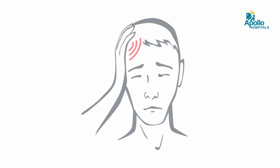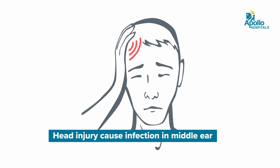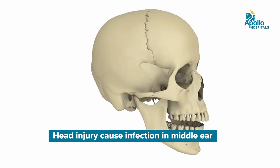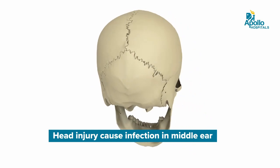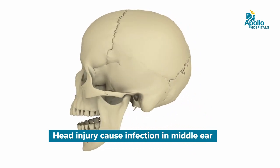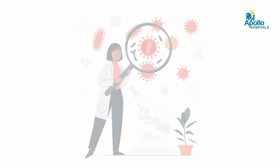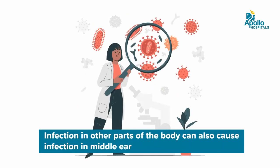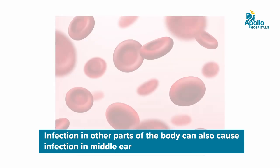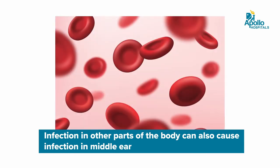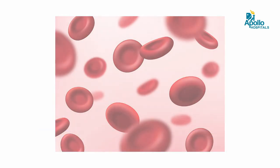Infection can also enter the middle ear through injuries — fractures, skull injuries, or head injuries — where infection can go directly into the middle ear. And sometimes there are infections elsewhere in the body and they get transferred into the middle ear through blood. So there are several routes through which infection can reach the middle ear.